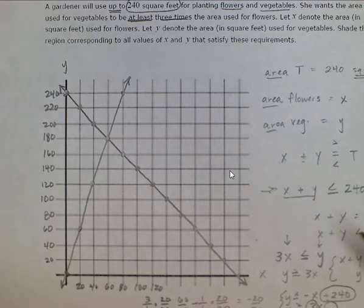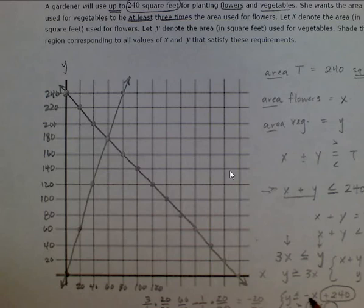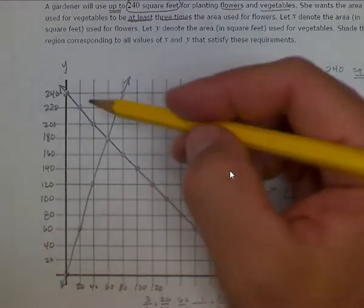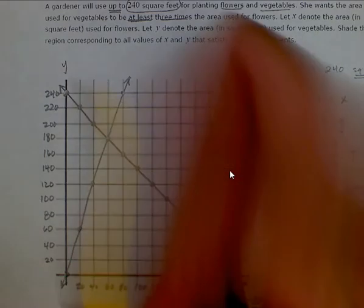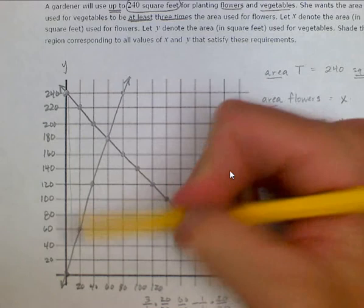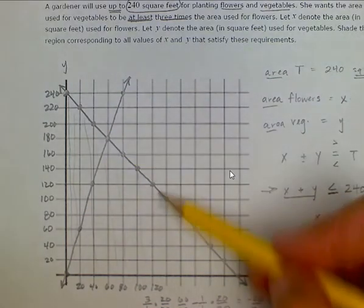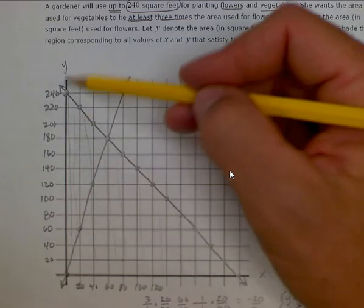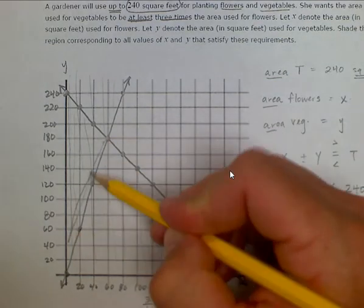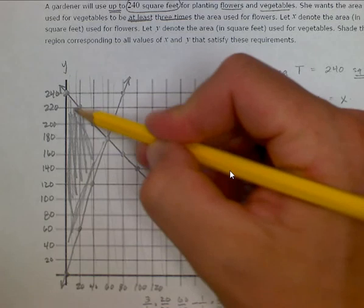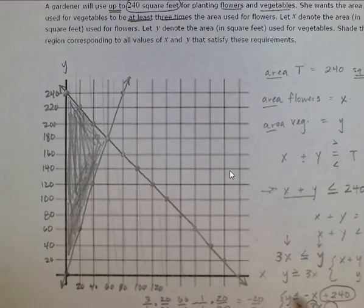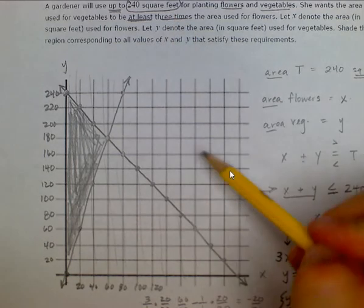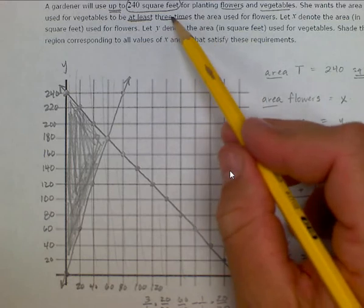Now we need to figure out where to shade. The first line, y ≤ negative x + 240, tells us all y values below the line are included. The second line, y ≥ 3x, tells us all y values above it are included. Shading below the top line and above the bottom line, the overlap is a triangle region. All coordinates in that triangle give us positive square footage satisfying both conditions.